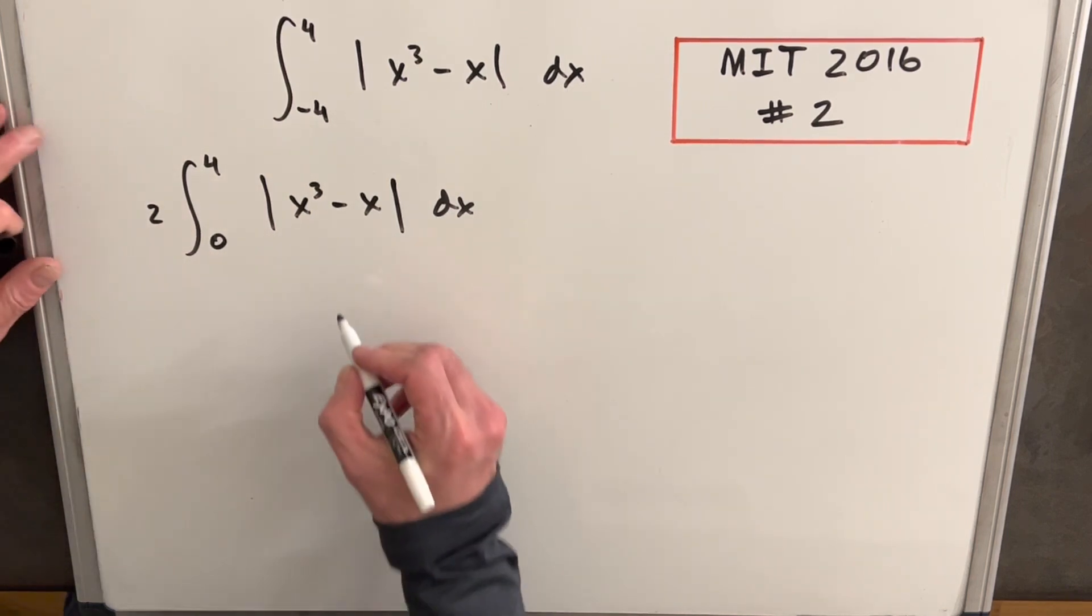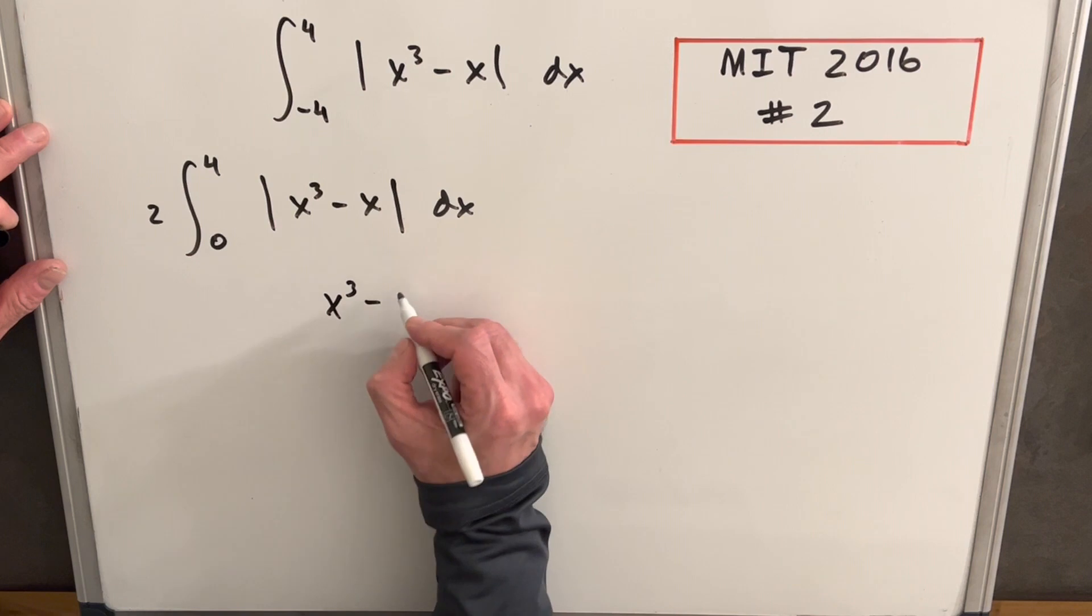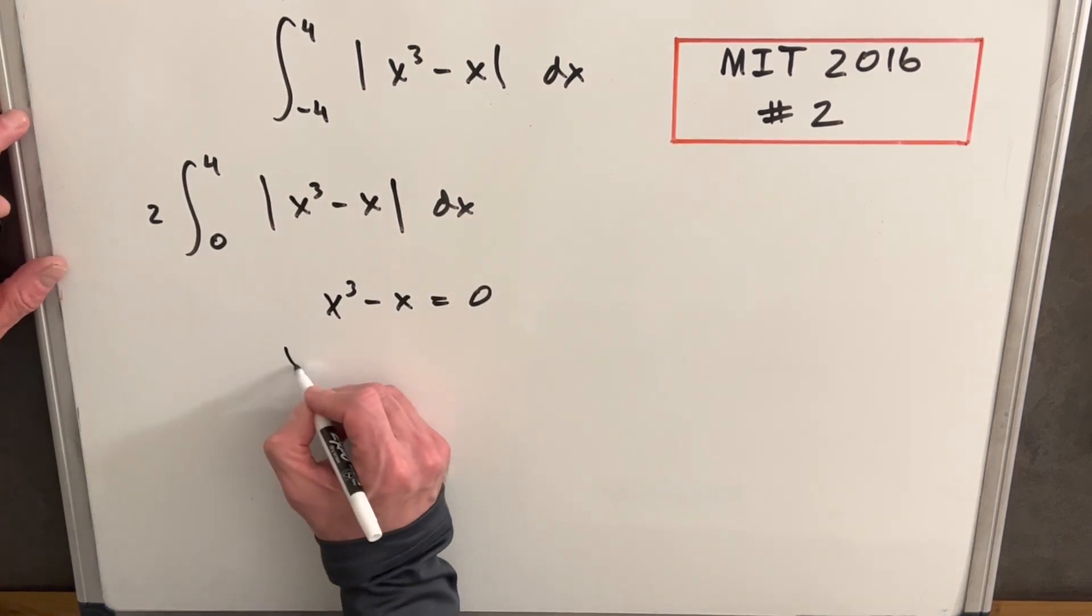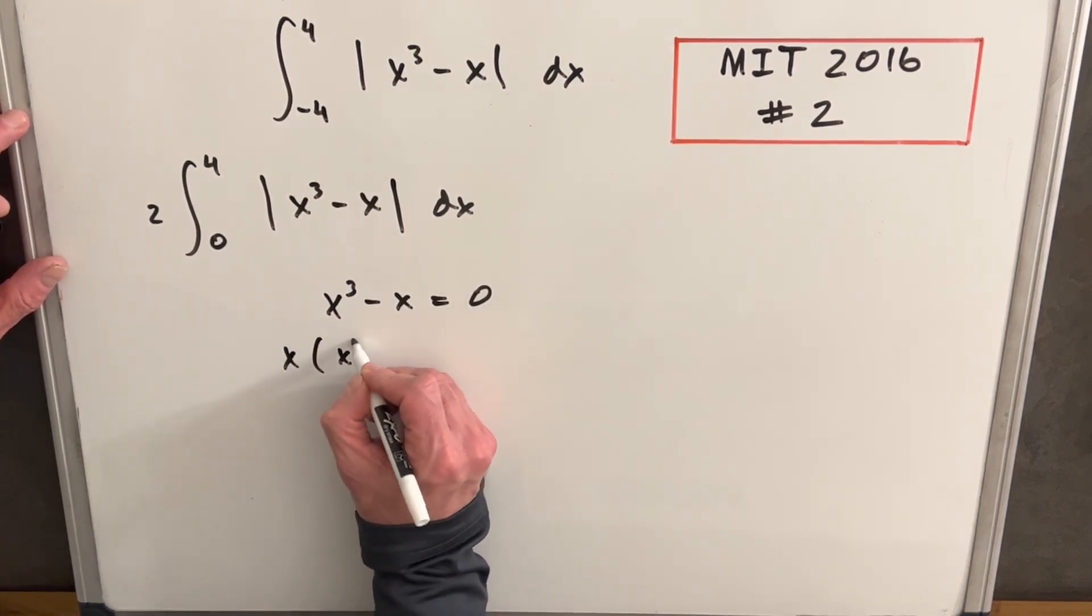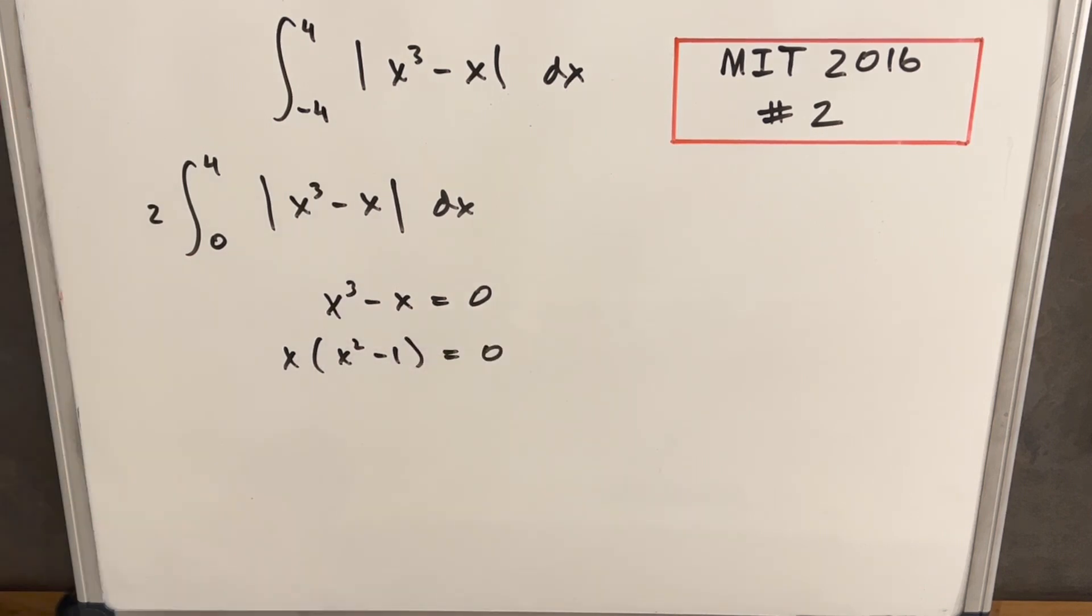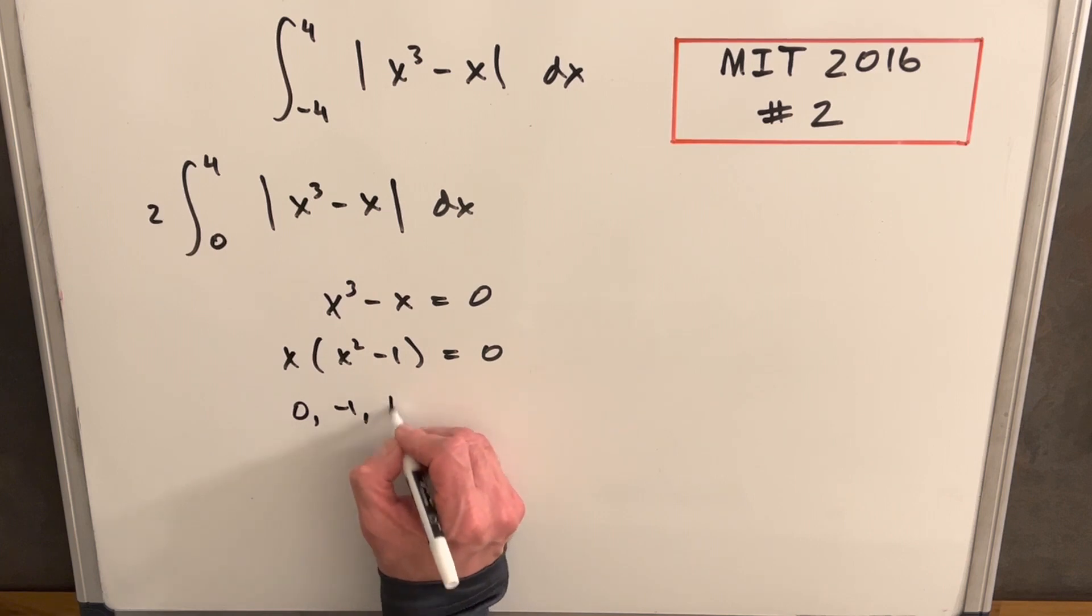If we look at x cubed minus x, when it's equal to zero, we can factor out an x, and this is x squared minus one. So this will have a few real solutions. That's zero, minus one, one.